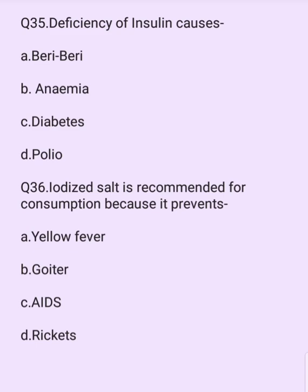Deficiency of insulin causes which disease? Options are: anemia, diabetes, polio. The answer is option C: diabetes.